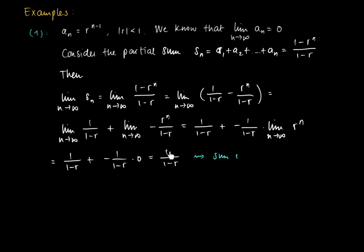So as a result we get 1/(1 minus r). The limit of the partial sums of a geometric sequence exists for |r| less than 1, and this value is called the sum of the geometric series.